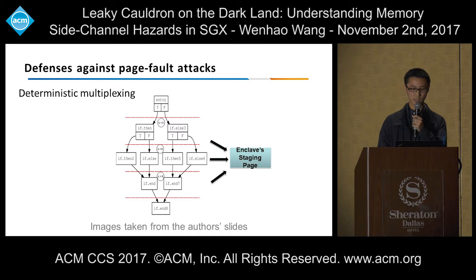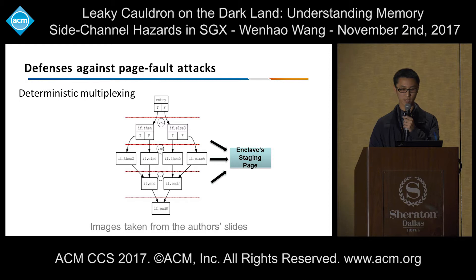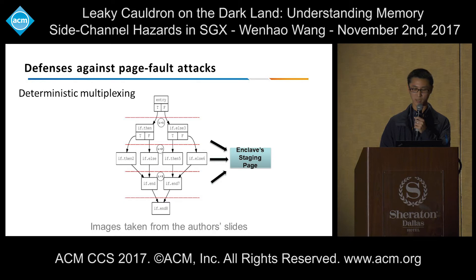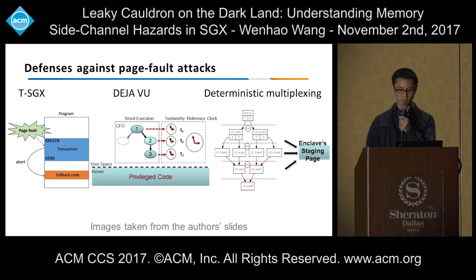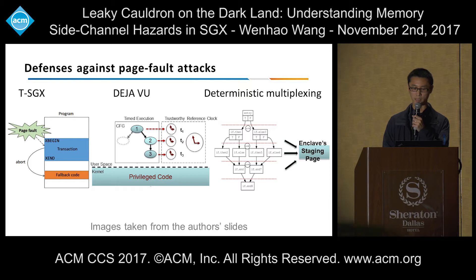Another defense detects exceptions inside the enclave by measuring the time difference between basic blocks using a trustworthy reference block, which is used inside the transaction to protect it from manipulation by the attacker. This defense is triggered whenever an exception happens — the idea being that execution time will be longer if an exception occurs. A third defense, deterministic multiplexing, hides page-level access patterns by first copying the code and data to a staging page before executing the secret code. The first two defenses work by detecting page faults or exceptions inside the enclave, while the third is designed against an attacker that tracks access patterns.